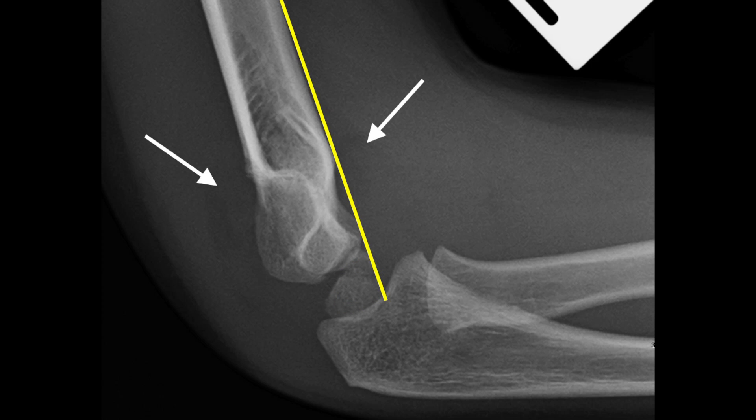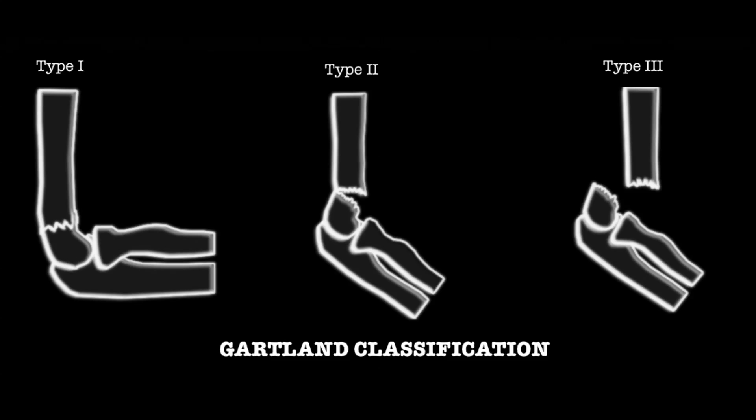Baumann's angle should also be calculated. Once you've had a look at the x-ray, it's important to classify the fracture according to the Gartland classification. This will determine whether conservative or surgical management is undertaken.